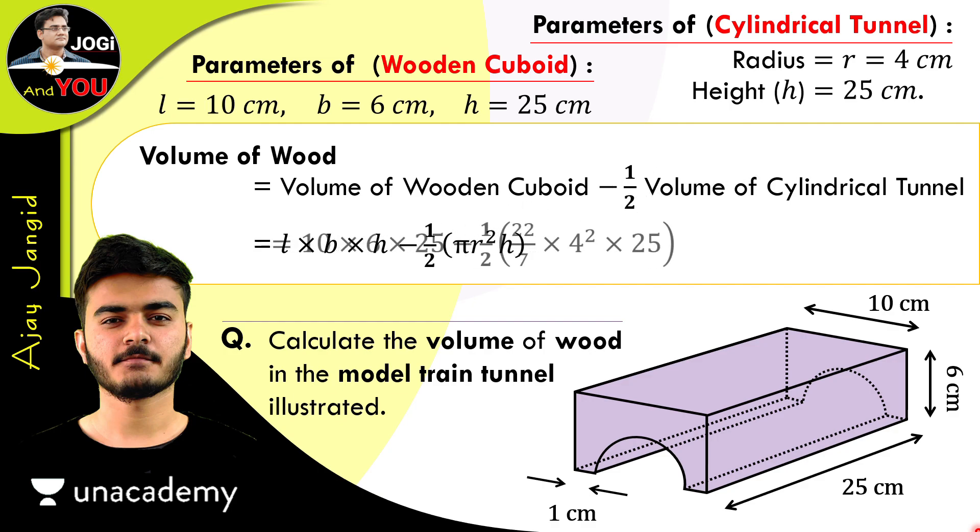So after replacing all the values, we have this. And if we calculate it, we will have our required answer, which is the volume of wood used to make this model train tunnel. Our l × b × h is 10 × 6 × 25. And the value of π is 22/7. The radius is 4, and the height is 25.